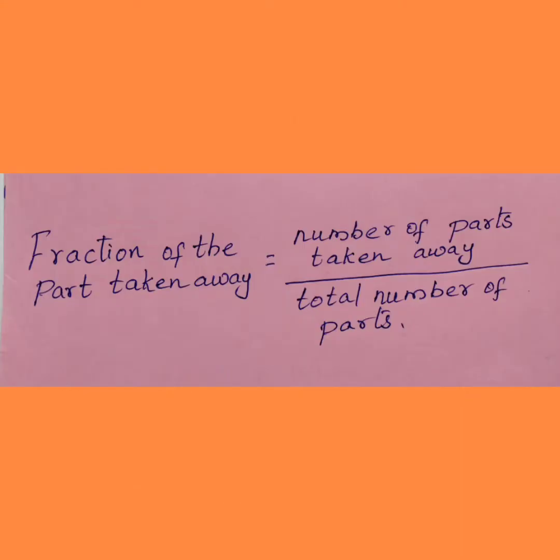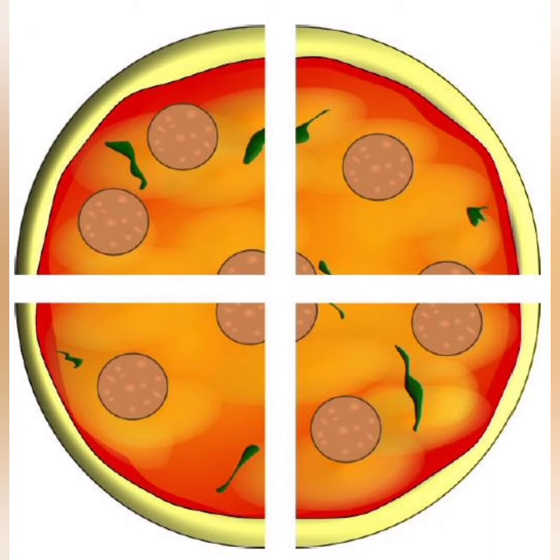Now, if we take a part from a whole part, how to write that fraction? It is the number of parts taken away from the total number of parts. If we have four pieces in a pizza and we are taking one piece from that, it means it is one by four.